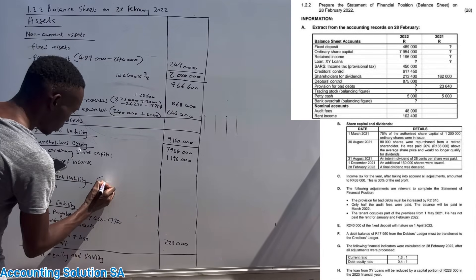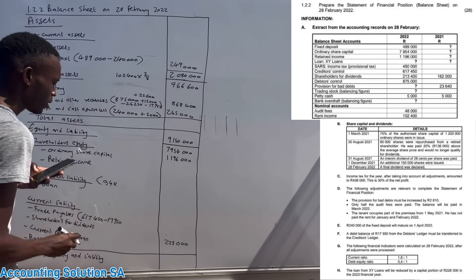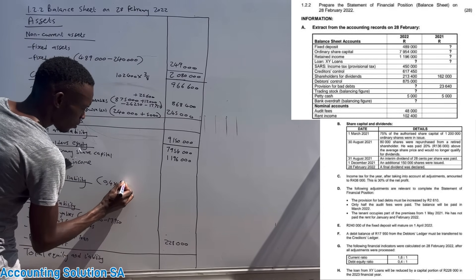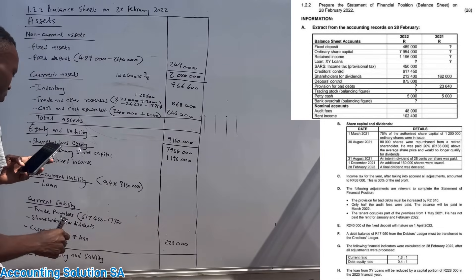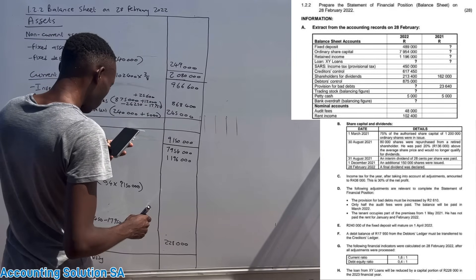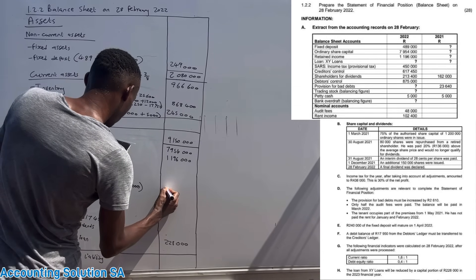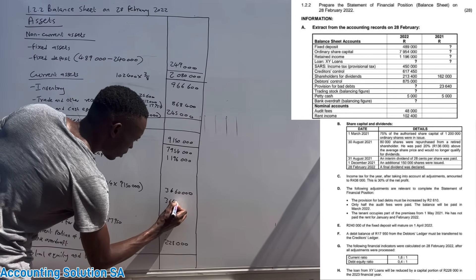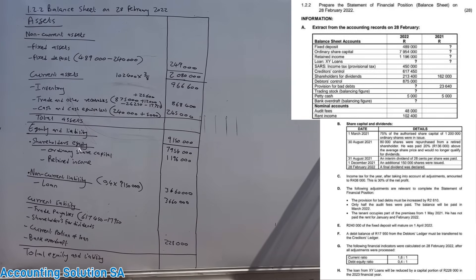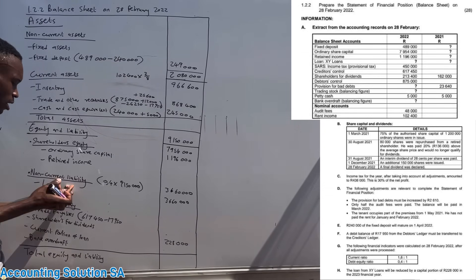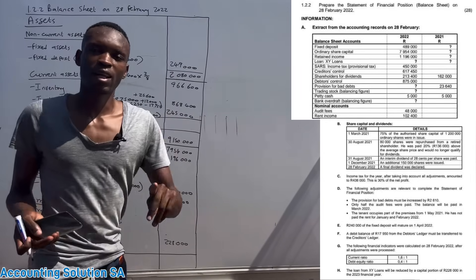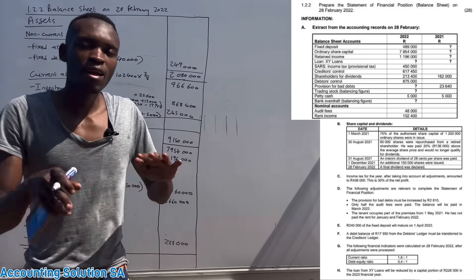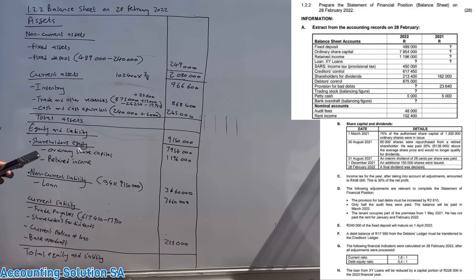Transaction G gives us the debt-equity ratio. The formula says non-current liability to shareholders' equity equals 0.4. We multiply 0.4 by shareholders' equity of 9,150,000 to get non-current liabilities. This gives 3,660,000, so the loan is 3,660,000. Since this comes from the formula, it is already the final adjusted answer — no further adjustments needed.